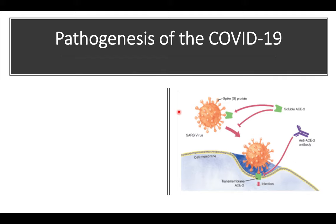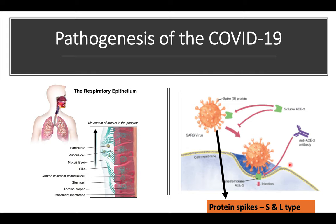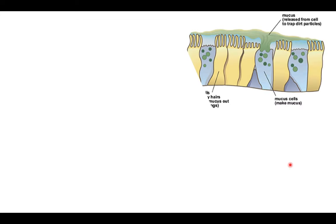Regarding the pathogenesis of COVID-19: the coronavirus has protein spikes that allow it to bind to receptors within the respiratory epithelium — specifically ACE2 receptors found in the lungs. Once bound, the virus enters the cell and starts multiplying using the cell's own machinery. It then causes heavy goblet cell mucus production, ciliated cell damage, cytokine release, and interleukin-driven inflammation, which clogs up the respiratory system and makes breathing difficult.